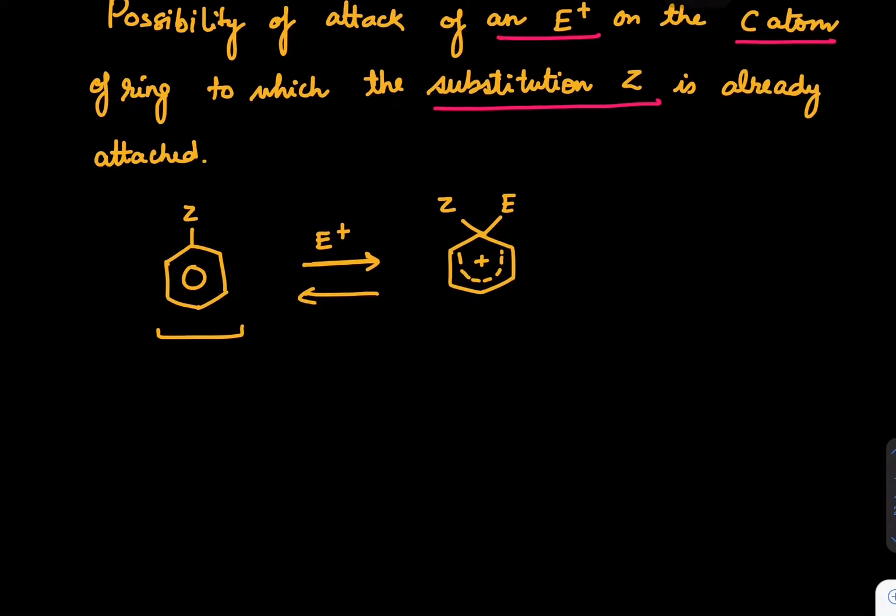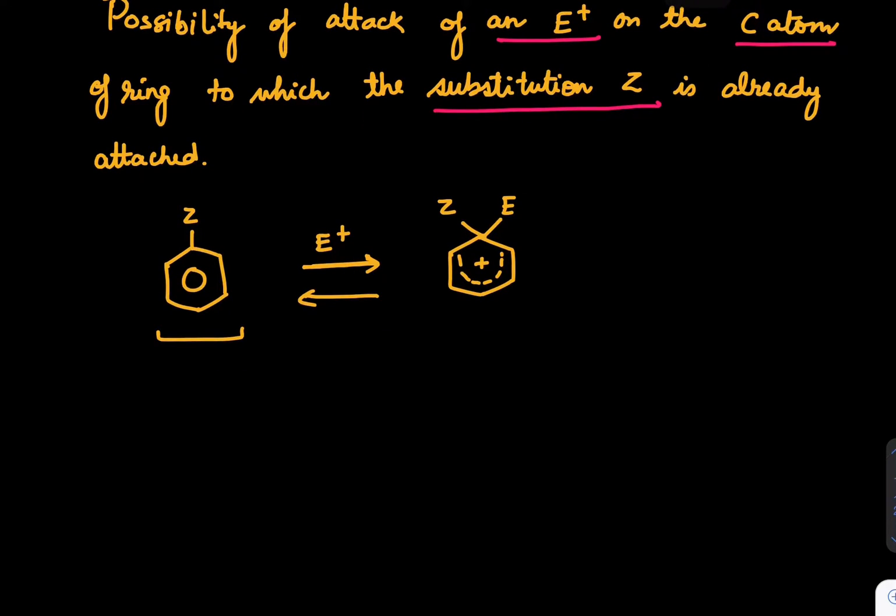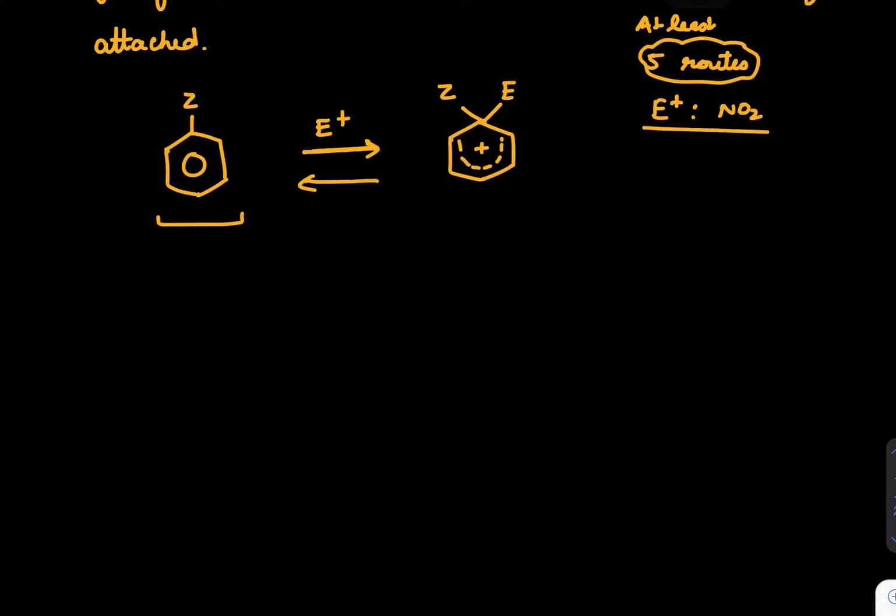Now this intermediate has possibility of 5 routes. It can go to 5 routes if E plus is NO2. So at least we can talk about 5 routes, I repeat, at least we can talk about 5 routes which are defined for E plus as NO2. Now this is really interesting going to be. So next, what is going to happen? Let's say we have this Z here with us, and then we have NO2, and we draw this kind of structure.